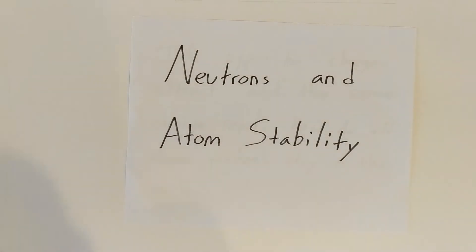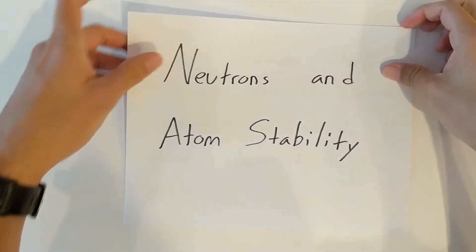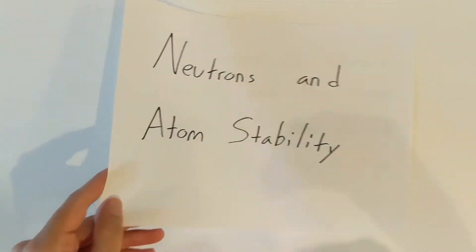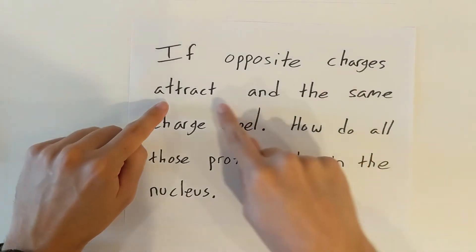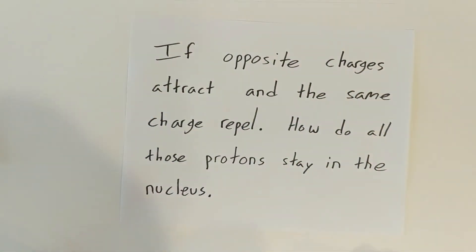This in the notes is going to be about neutrons and atom stability. The question that we are going to be answering is if opposite charges attract and the same charges repel, how do all the protons stay in the nucleus without just repelling each other and blowing the atom up?